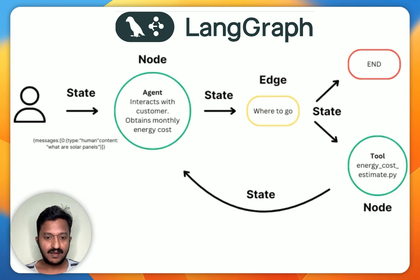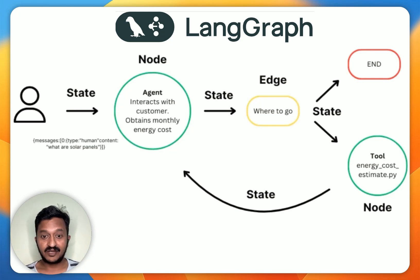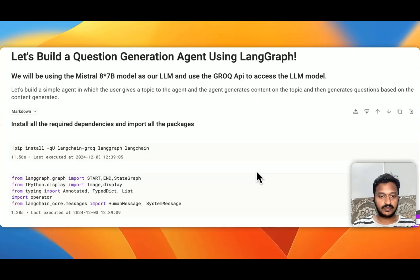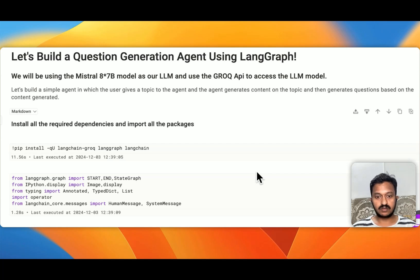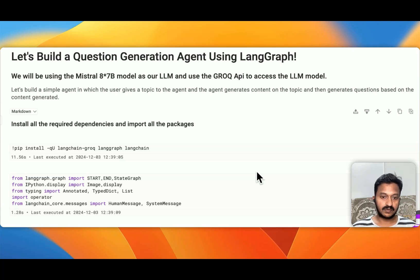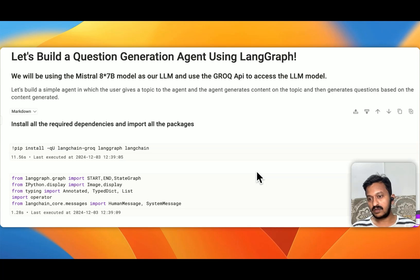So let's see how to build a simple question generation agent using LangGraph in our tutorial. We will be using the Mistral 8.7B model as our LLM and we will use the Groq API key to access the LLM model. We'll build a simple agent in which the user gives a topic to the agent, the agent generates content on the topic, and then also generates questions based on that content.